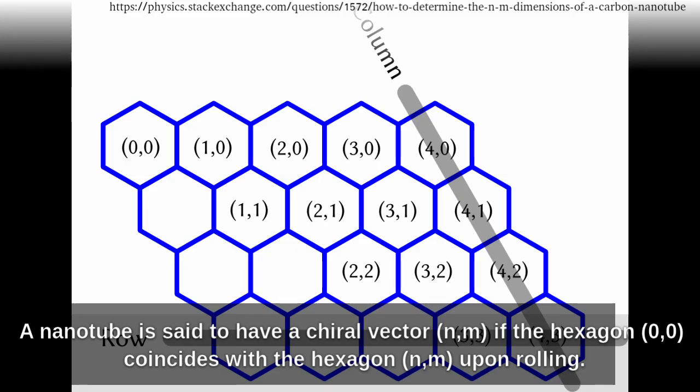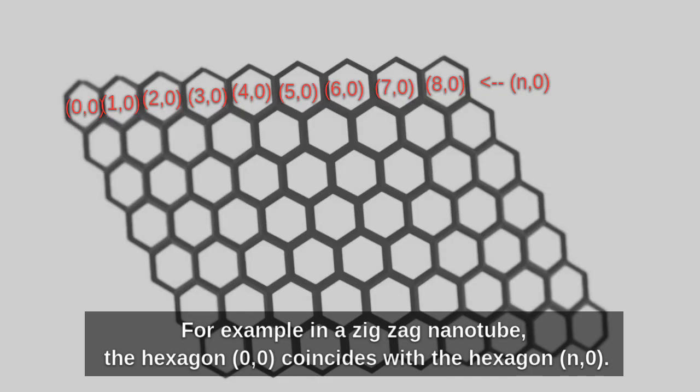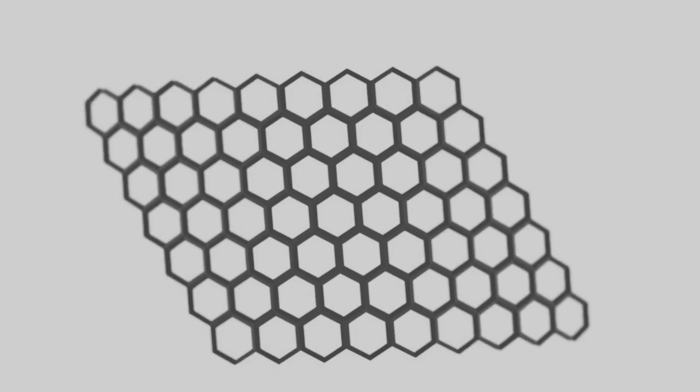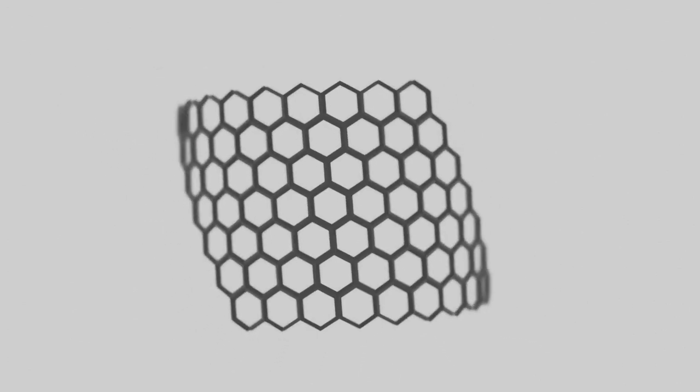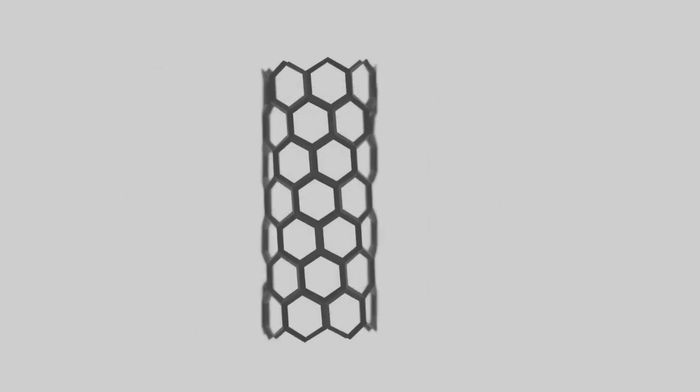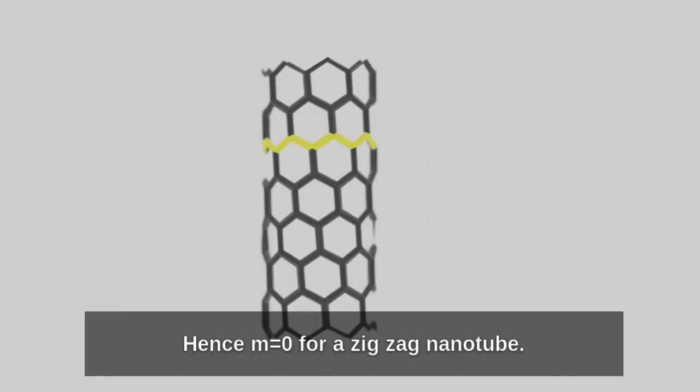A nanotube is said to have a chiral vector (n, m) if the hexagon (0, 0) coincides with the hexagon (n, m) upon rolling. For example, in a zigzag nanotube, the hexagon (0, 0) coincides with the hexagon (n, 0), hence m equals 0 for a zigzag nanotube.